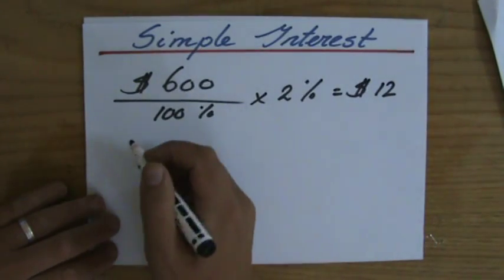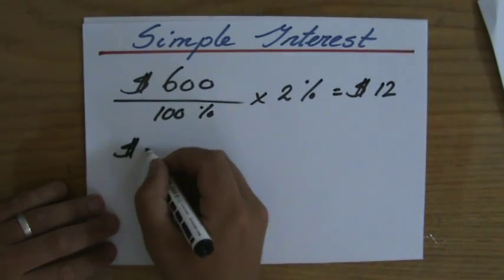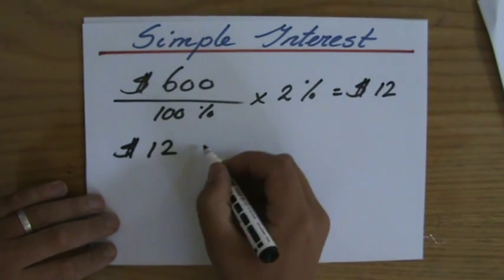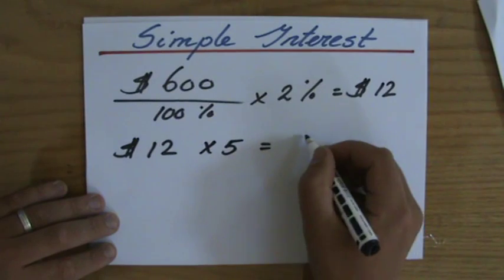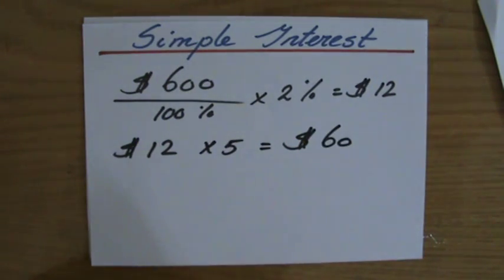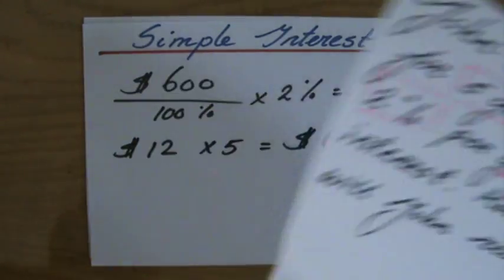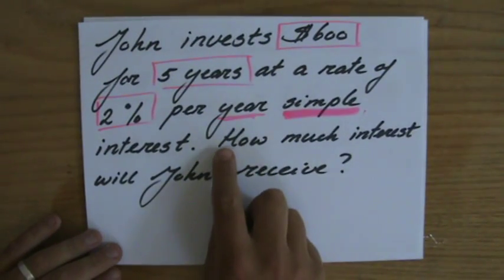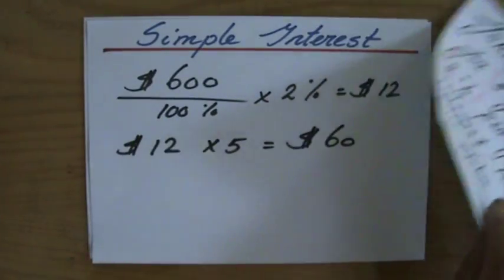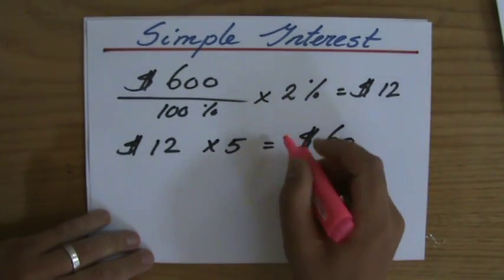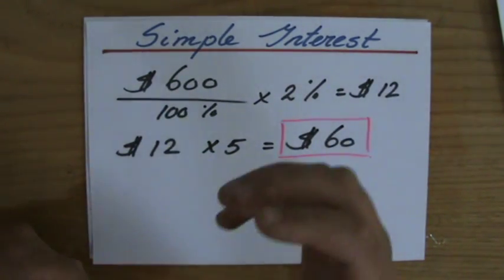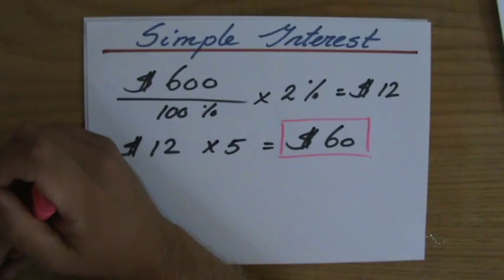Simple interest means that if I get twelve dollars per year, then for five years — and this question is asking after five years — I'm going to get twelve times five, which is sixty dollars. The question asks how much interest will John receive, so sixty dollars is the final answer.